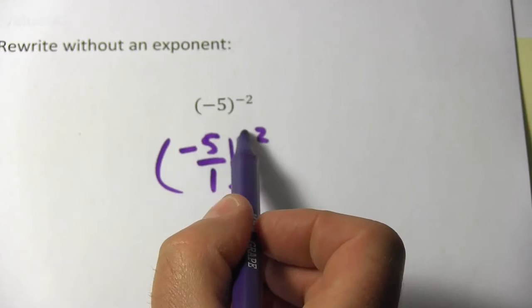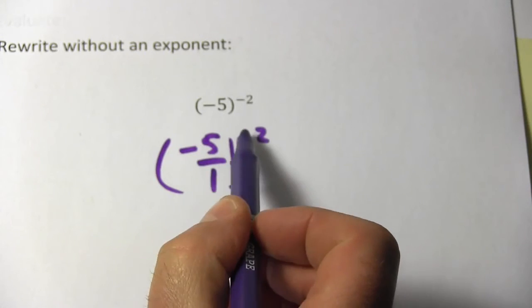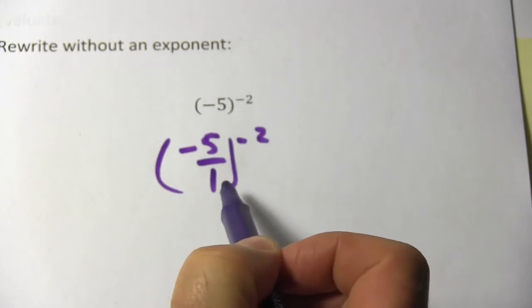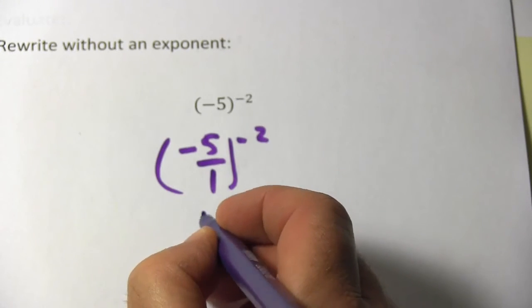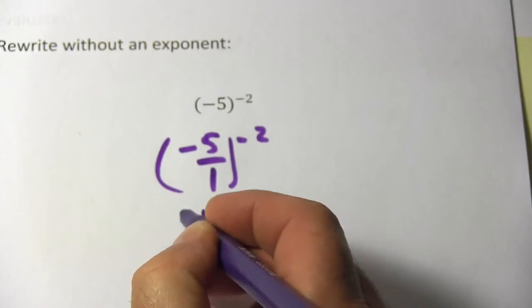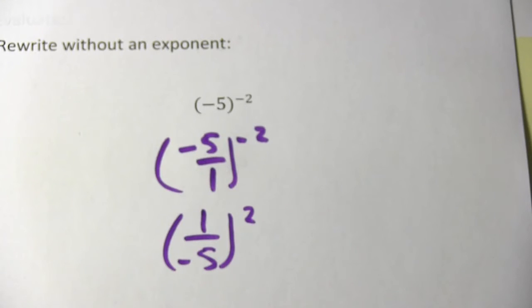Now, I can go ahead and apply the negative sign from the exponent to flip the fraction. So instead of negative 5 over 1, I'm going to rewrite this as 1 over negative 5, and this is to the second power.